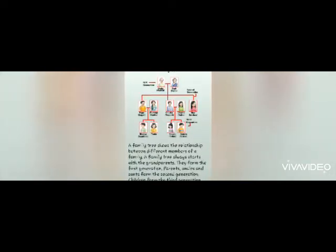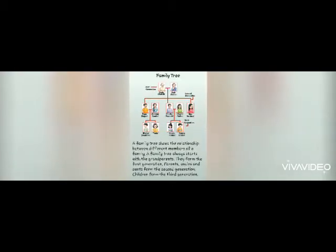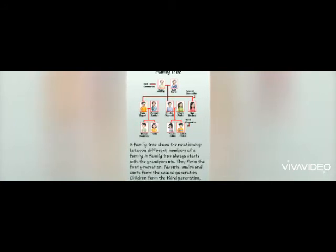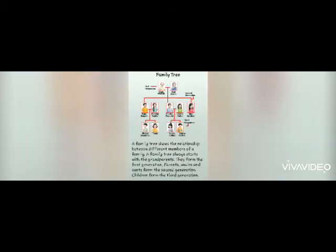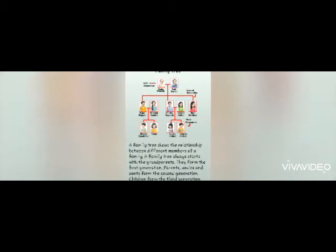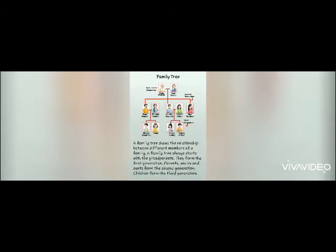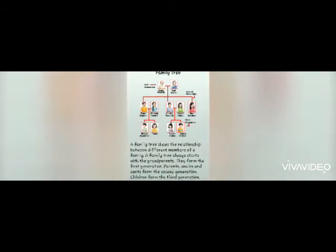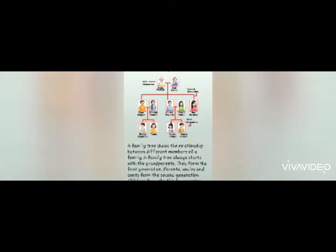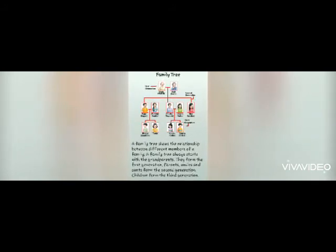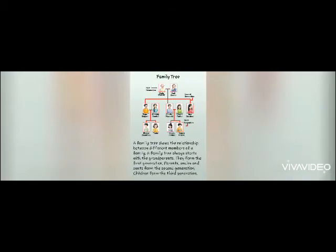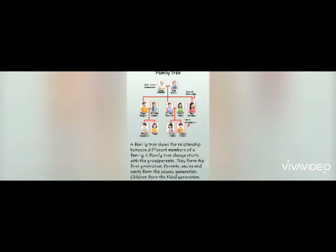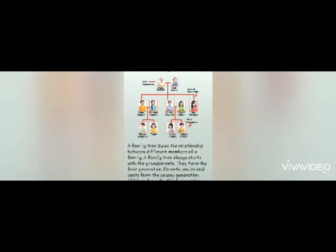Parents, uncles and aunts form the second generation. Children form the third generation. It means family tree ये show करता है कि परिवार में कैसे कैसे relations हैं — जैसे दादा दादी, पापा मम्मी, चाचा चाची, बुवा, भाई बहन। दादा दादी first generation में आते हैं, पापा मम्मी और चाचा चाची second generation हैं, और जो हमारे भाई बहन या चाचा चाची के बच्चे हैं वो third generation में आते हैं। Generation means पीढ़ी।